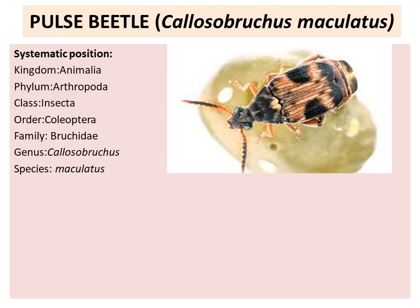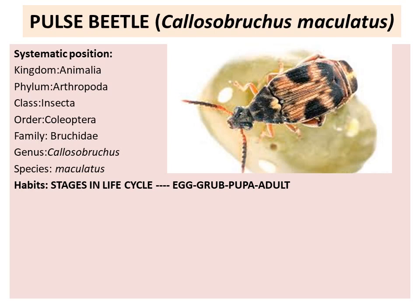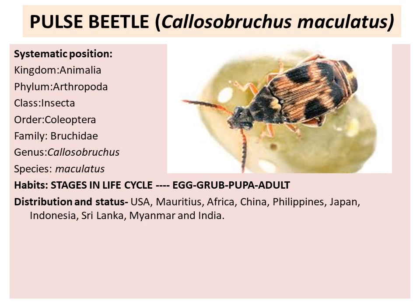Habits: Callosobruchus maculatus includes in its life cycle four important stages — egg, grub, pupa, and adult. The larva is known as a grub. There are four instar larvae: first instar, second instar, third instar, and fourth instar.